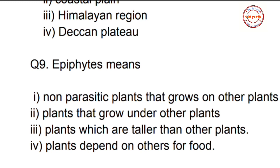Question number nine: Epiphytes means — first option: a non-parasitic plant that grows on other plants; second option: plants that grow under other plants; third option: plants which are taller than other plants; fourth option: plants that depend on others for food. The correct answer is option one — epiphytes are non-parasitic plants that grow on other plants.